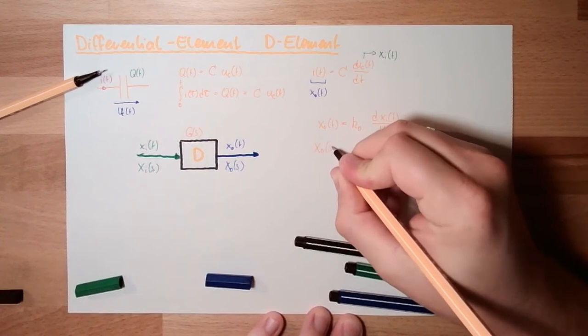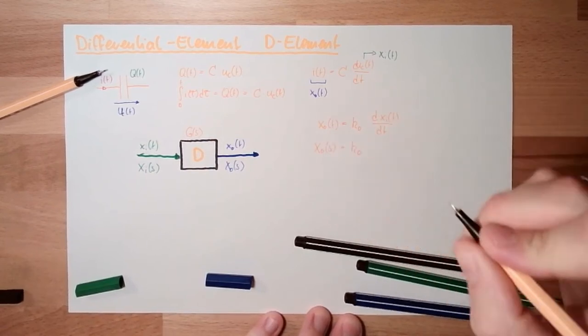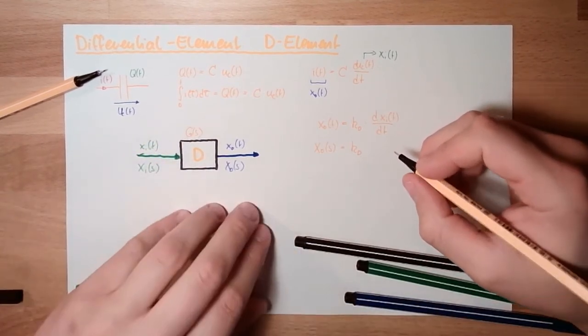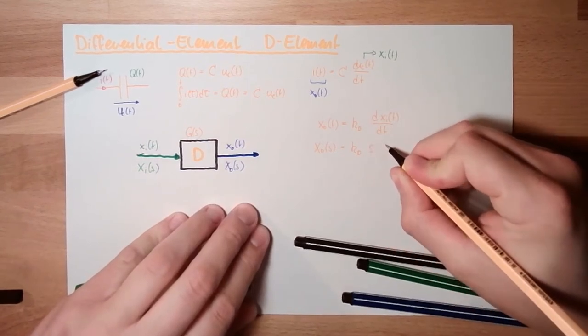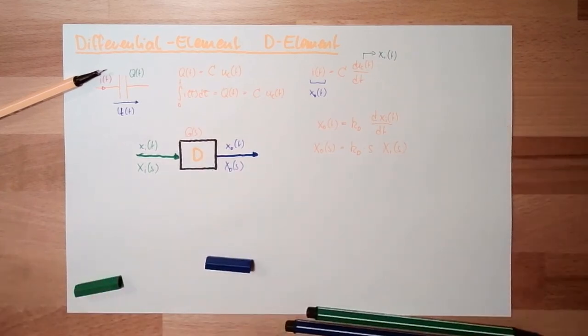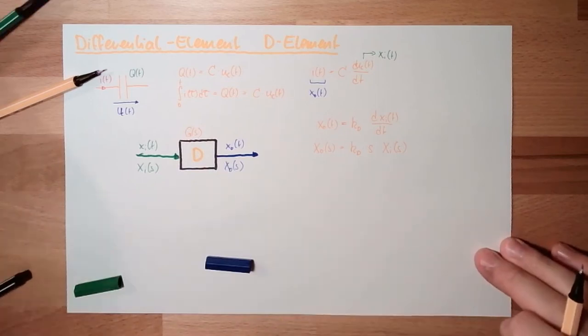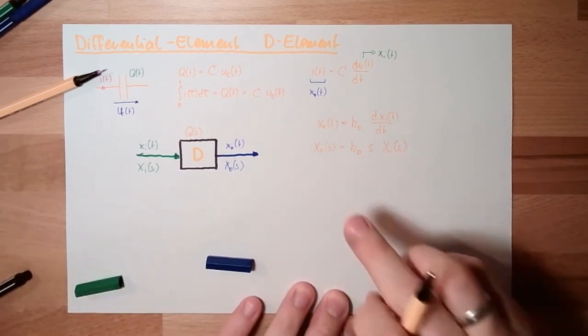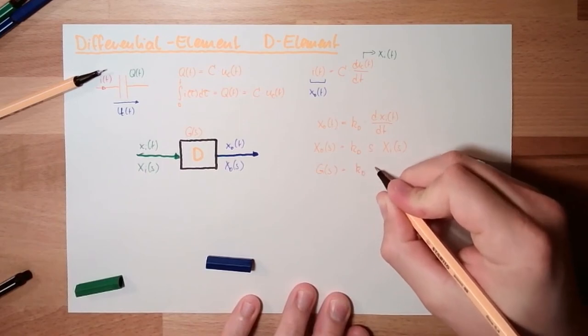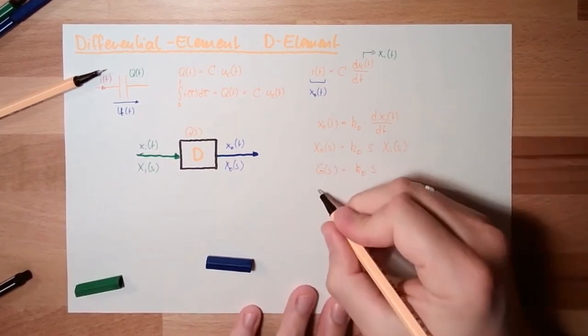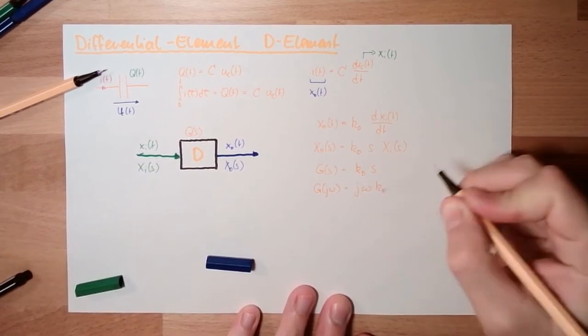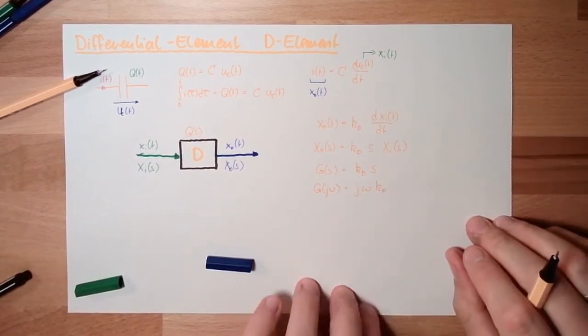If I do this transition to the Laplace area, XO from S equals KD multiplied by S and XI from S. I assume the input was zero and all derivations were zero and so on. So I already see the transfer function. XI multiplied by GS is XO. So this GS must be KD multiplied by S.